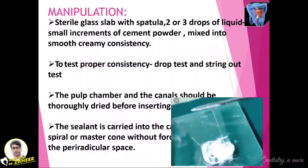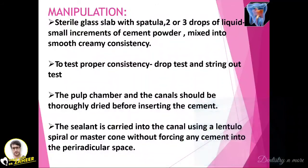To test proper consistency, the drop test and string-out test are used — place the spatula on the cement and lift it to observe the string. The pulp chamber and canal should be thoroughly dried before inserting the cement. The sealant is carried into the canal using a lentil spiral or master cone, without forcing any cement into the periradicular space, because eugenol can create periapical reactions.